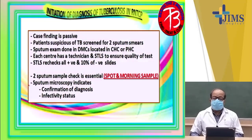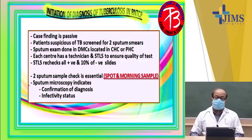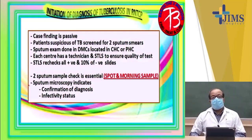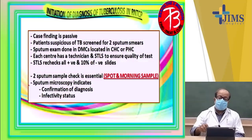Two sputum samples are checked: one is a spot sample and another is a morning sample. Sputum microscopy confirms the diagnosis. If the sputum microscopy is positive and shows Mycobacterium tuberculosis, then we have to start treatment — it is a confirmatory diagnostic test. It also shows the infectivity status. If the number of bacilli per power field of the microscope is very high, it shows that the patient needs segregation or hospitalization so that he does not spread the infection in the community.